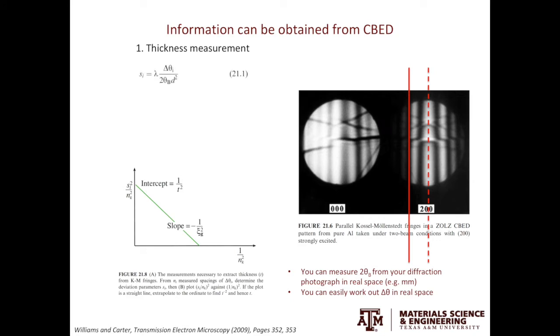Now, let's do the thickness estimation. We will introduce a new parameter called SI. SI is a function of lambda, delta theta i, theta b, and d. Lambda is the wavelength of your electron beam, which is determined by the acceleration voltage. Delta theta i and theta b are the values you can measure using a ruler on the film. D is the interplanar spacing. In this case, it's the interplanar spacing of the 200 planes.